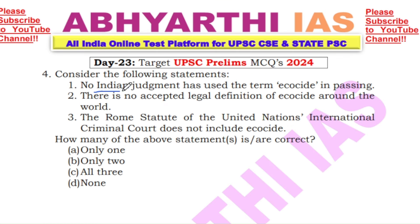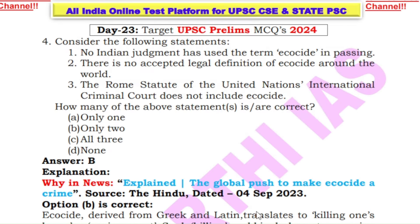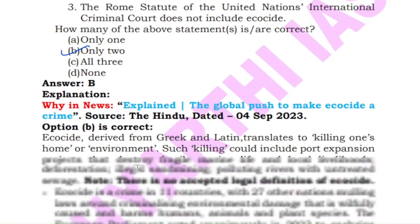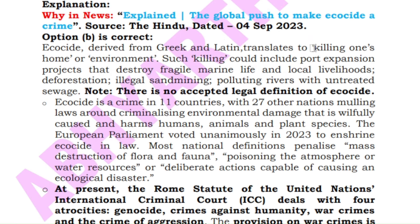Next question: Consider the following statements about ecocide — 1) No Indian judgment has used the term ecocide in passing. 2) There is no accepted legal definition of ecocide around the world. 3) The Rome Statute of the UN International Criminal Court does not include ecocide. How many statements are correct? The answer is B — two statements are correct. The word ecocide is derived from Greek and Latin, meaning the destruction of someone's environment or home. It is used in the context of wildlife habitat destruction — such as port expansion, deforestation, illegal sand mining, or polluting rivers with untreated sewage. There is no universally accepted legal definition of ecocide.